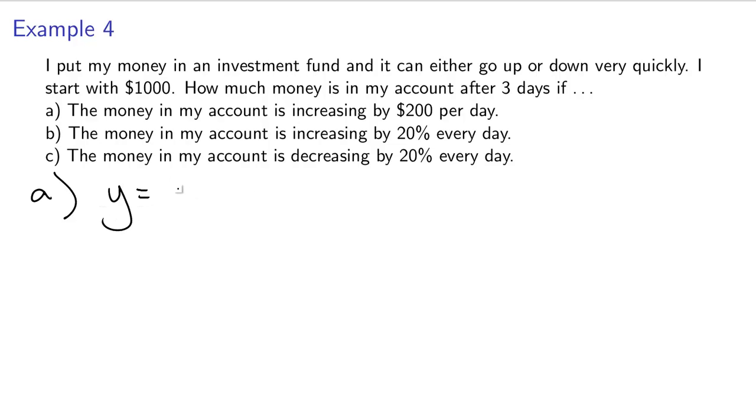So here, my y would actually be a linear function, mx plus b. So what would m be? This would be my slope. It's increasing by $200 every day. And what would my intercept be? Well, it would be what I started with, plus 1,000. So after three days here, so f of 3, if this was f of x, f of 3 would be 200 times 3 plus 1,000, or it would be 1,600.